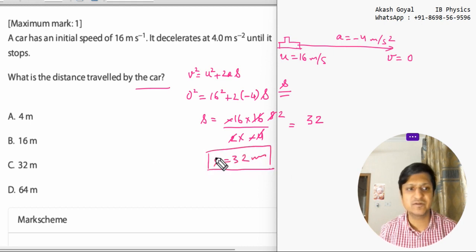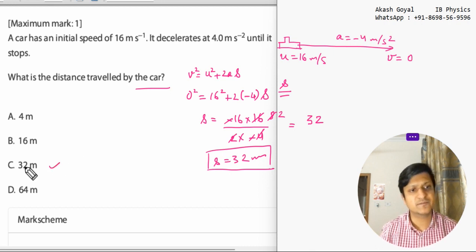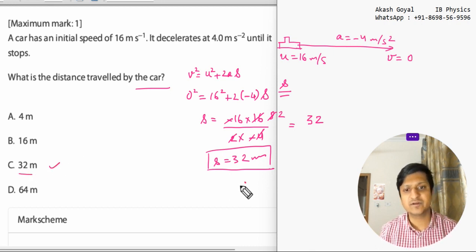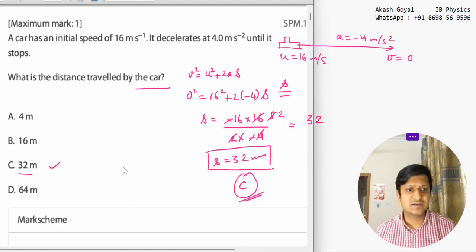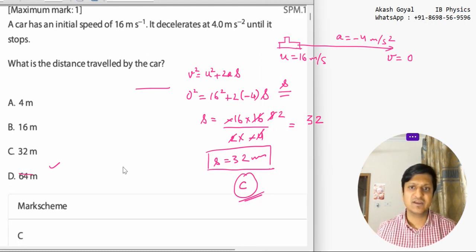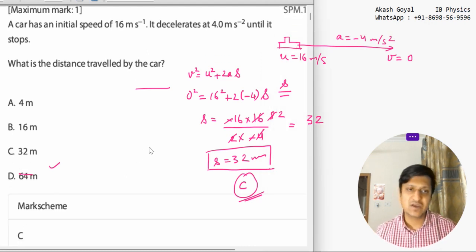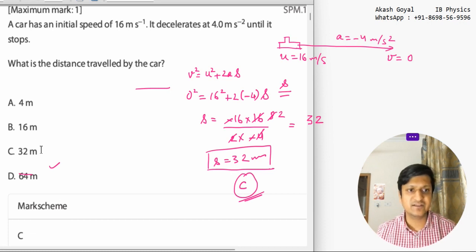So the option here is 32, C option. So we got C as the answer and now we will check the scheme. C is the option here. So we got the answer as C, 32 meters.